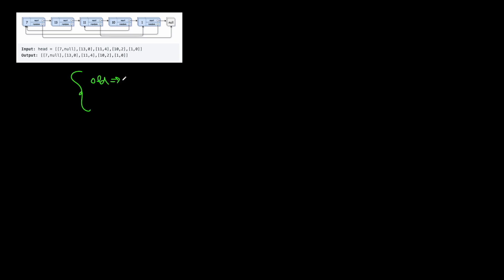So how are we going to solve this problem? This question is one of those clone/copy questions, where we need to take some original data structure, copy all the elements and then return the cloned data structure. The way we want to do this is we're going to maintain a dictionary which maps old values to their new copy.